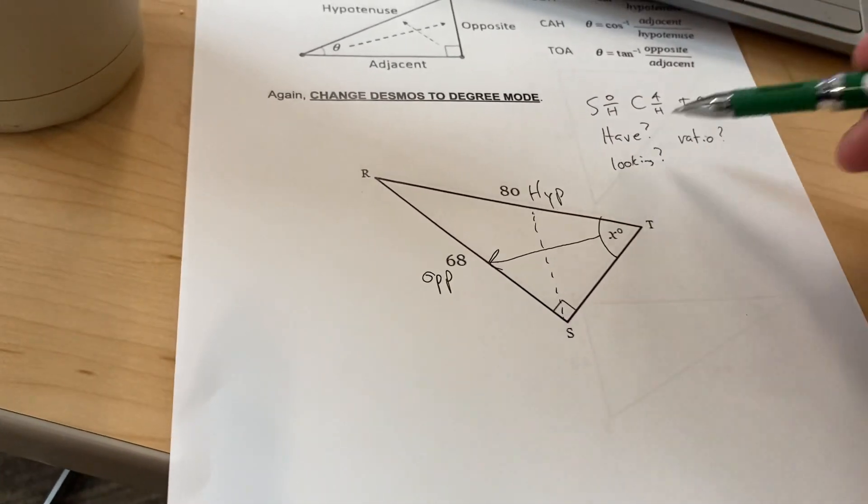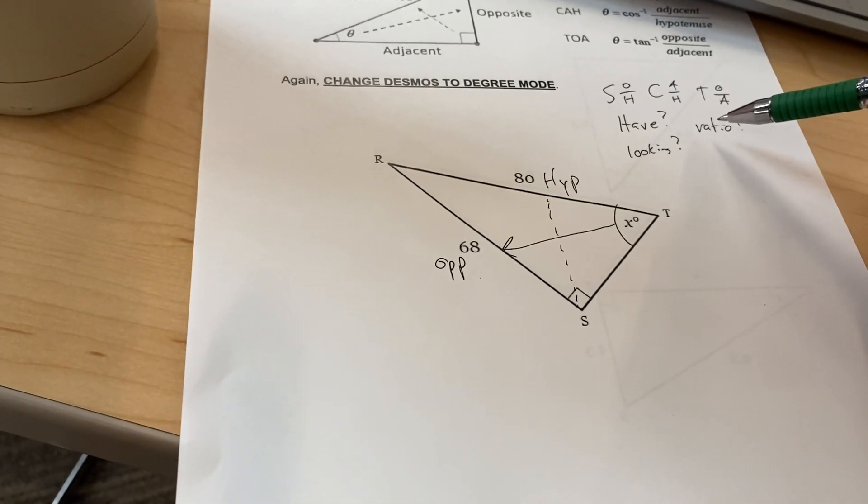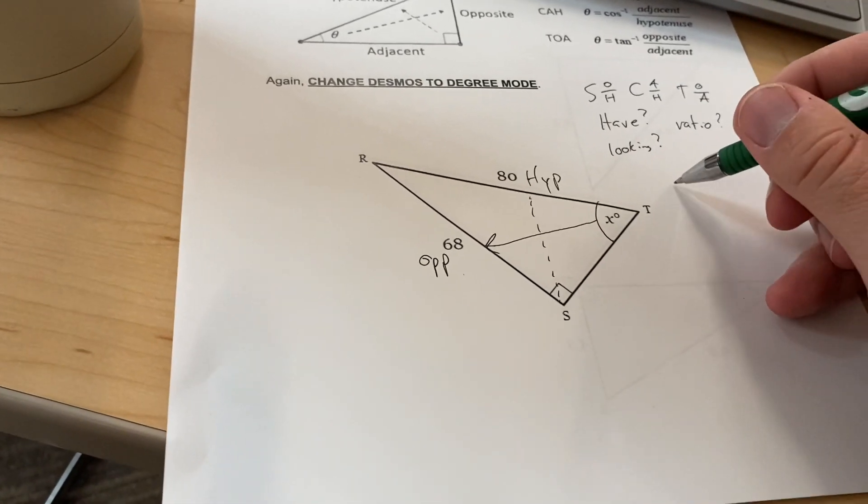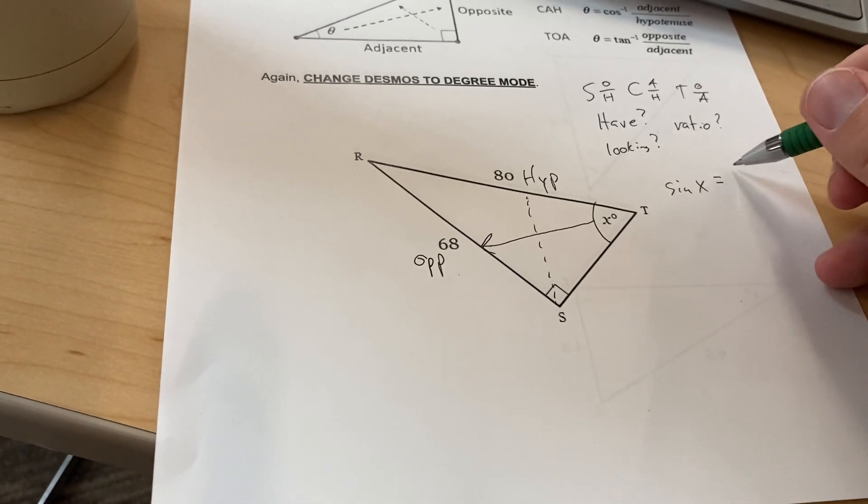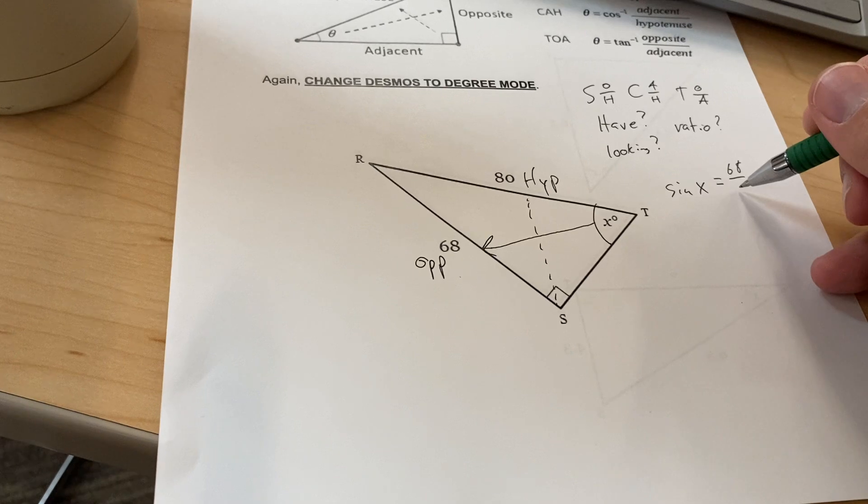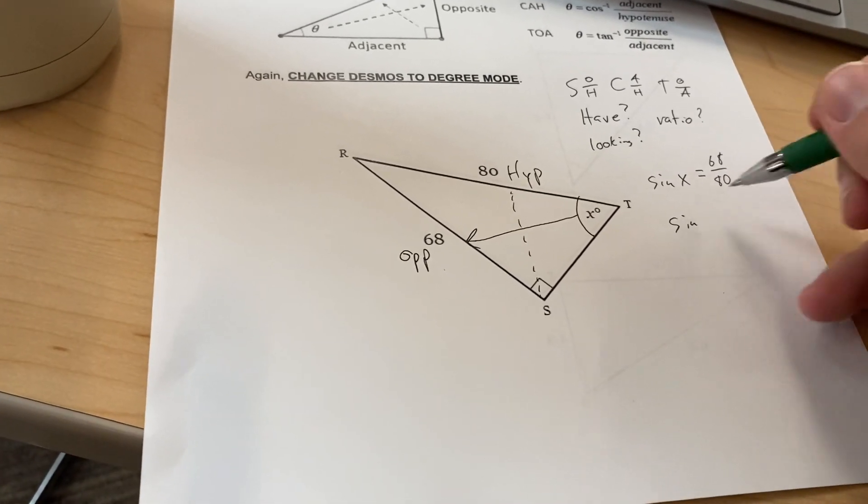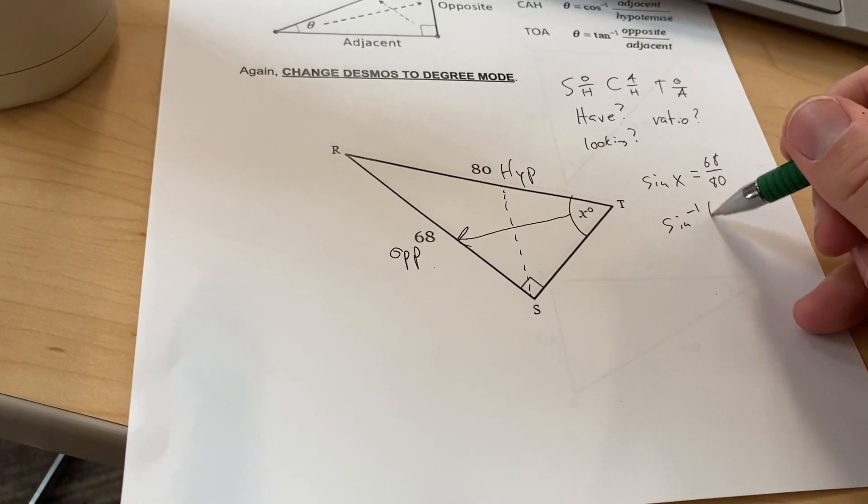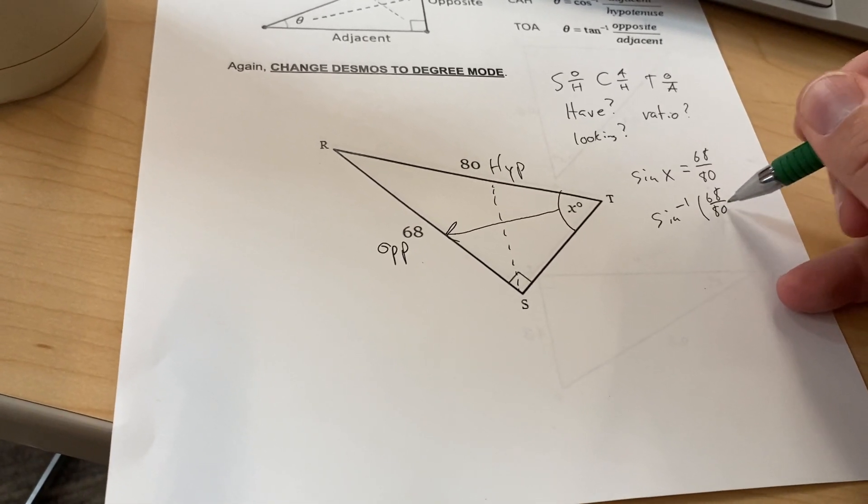Since we have the opposite and hypotenuse, our ratio is going to be sine. We're looking for that angle, so sine of X equals the opposite side of 68 over the hypotenuse of 80. What you're going to type in the calculator is the inverse sine, that arc sine, of 68 over 80.